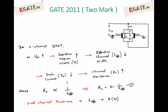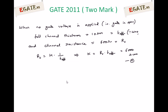Before calculating K, note that the full channel thickness equals the effective channel thickness plus 2 times the depletion region width W, because P-N junctions are present on both sides: T_full = T_effective + 2W. The given information states that when no gate voltage is applied — that is, when the gate is open — the full channel thickness of 10 µm is available. Since the gate is open, no depletion region is formed, so W equals 0 and T_effective equals 10 µm. Channel resistance is given as 600 ohms. Therefore, K = Rc × T_effective = 600 × 10 = 6000 Ω·µm.